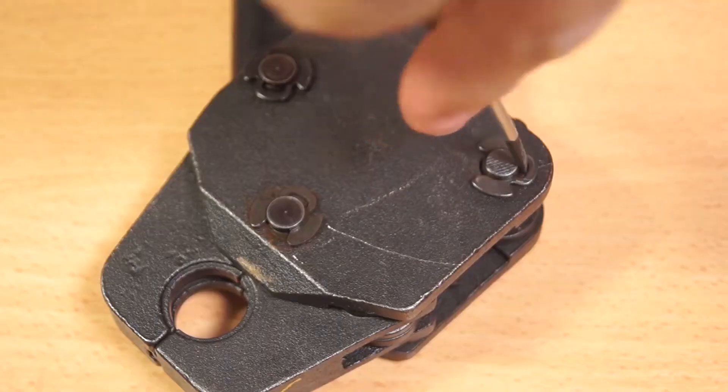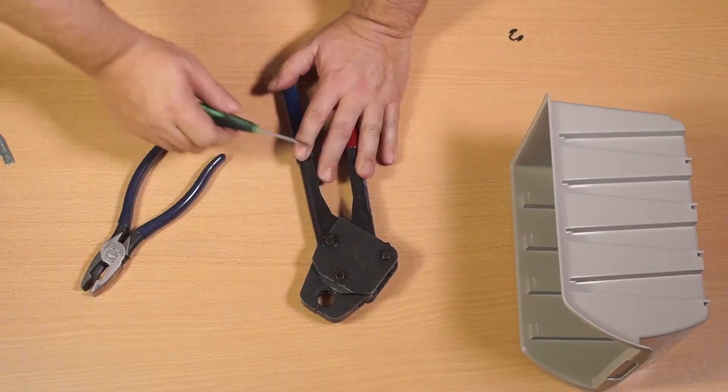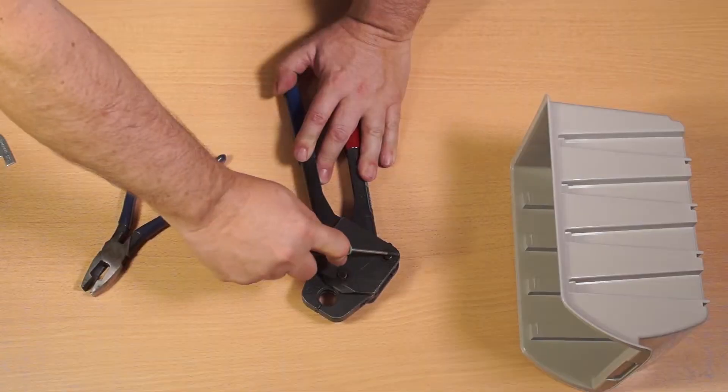Remove the E-clip from the adjustment pin using the small screwdriver. Use caution not to lose the E-clip when removing it.